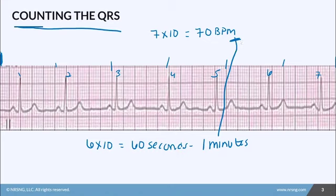Always make sure it is a six-second strip — you can identify that by knowing the boxes in between the seconds. This method is a little bit harder when you have a patient with an irregular heart rhythm, which I'll explain shortly.